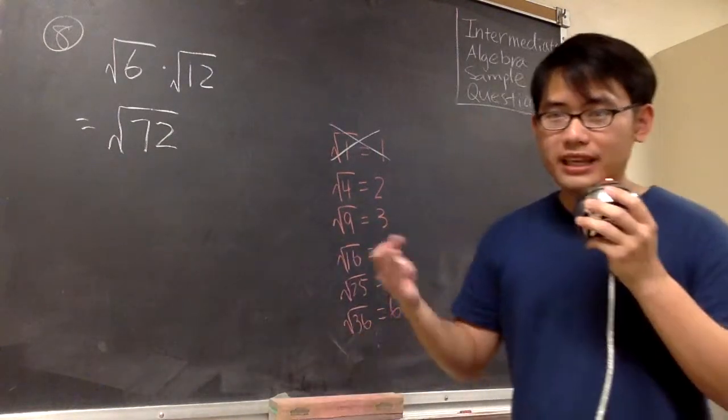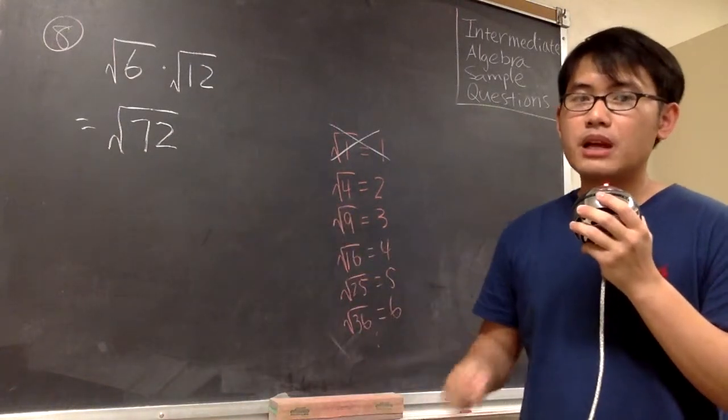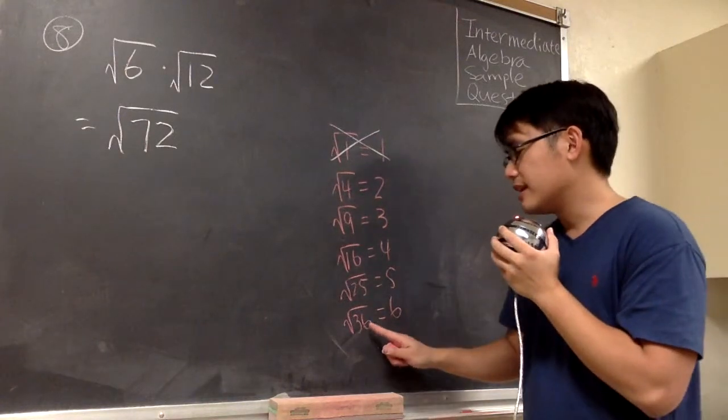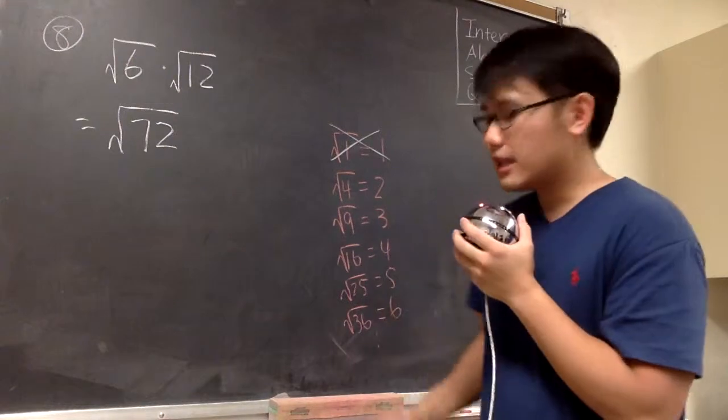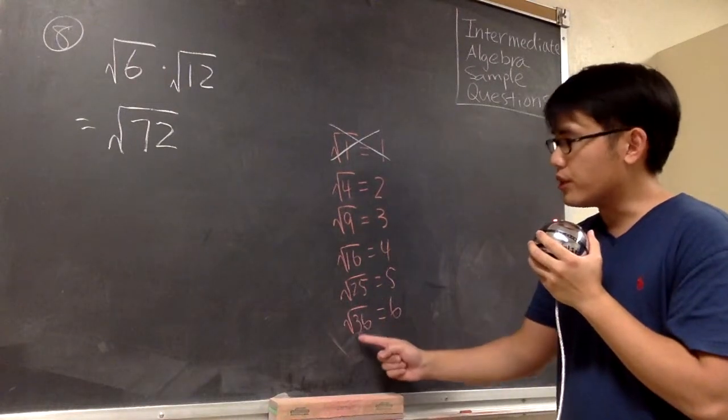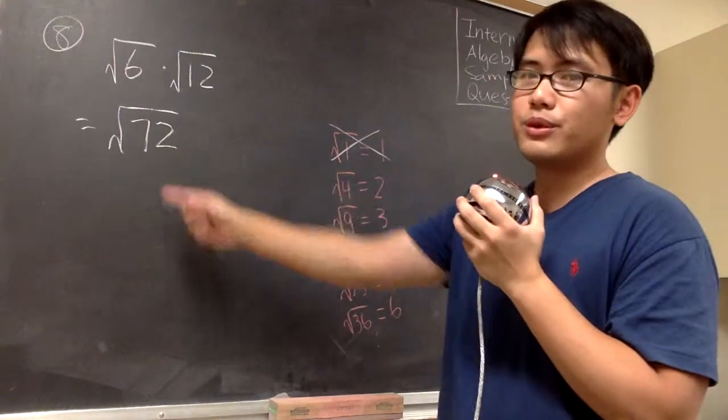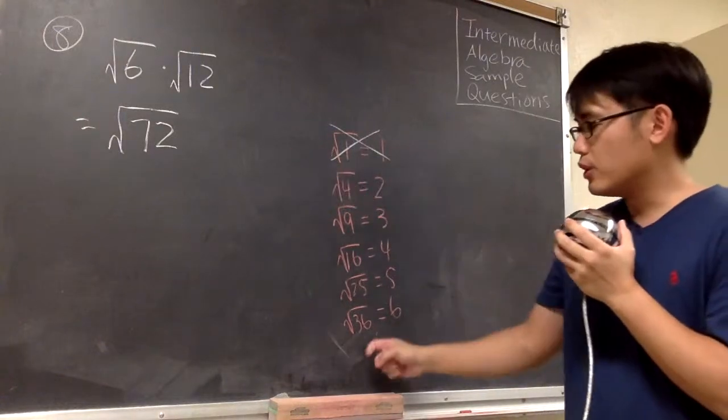However, we know that 36 will go into 72 twice. This is the bigger perfect square that will go into 72. We are going to break down 72 by using square root of 36.